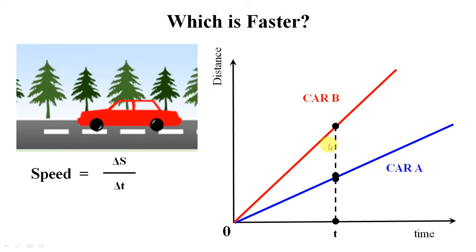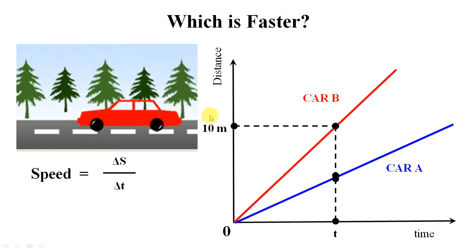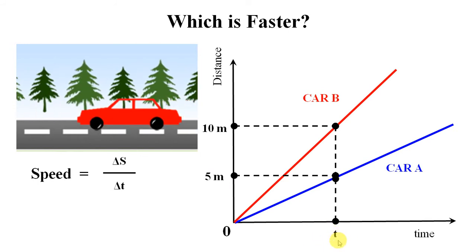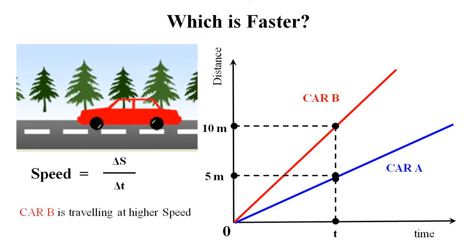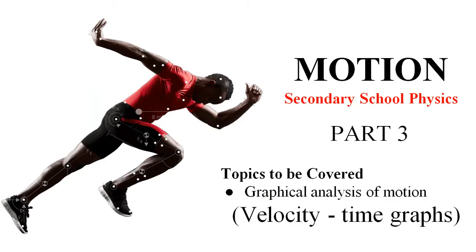Let's say Car B covers 10 meters in time t seconds, while Car A covers 5 meters in the same time t. In the same amount of time, Car A covers 5 meters and Car B covers 10 meters, which directly shows that Car B is at a higher speed than Car A. That's it for this tutorial — in Motion Part 3 we are going to cover velocity-time graphs.